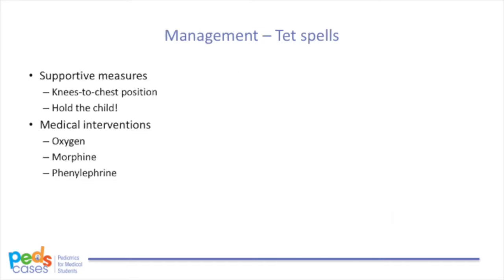Let's move on to management. Now that the diagnosis of Tetralogy of Fallot has been confirmed, Josh's parents have a lot of questions. They want to know what they should do when Josh turns blue. The management for TET spells can be divided into two categories: supportive measures performed by the parent or guardian, and medical interventions provided by a physician. Supportive measures include: 1. Place the child in a knees-to-chest position — this increases systemic resistance, reducing the right-to-left shunting. 2. Have the caregiver hold the child to prevent further agitation and help him or her calm down.